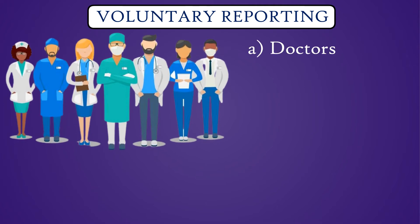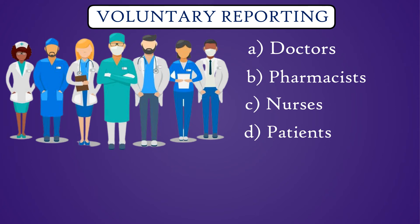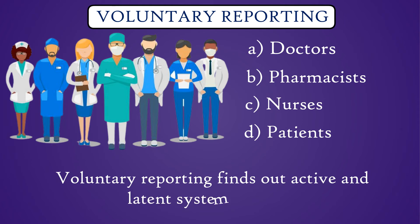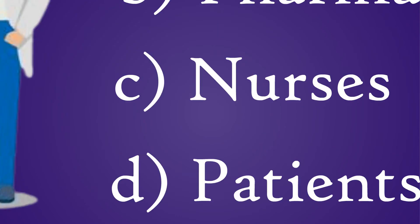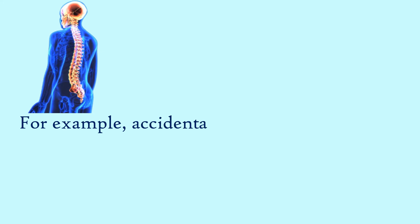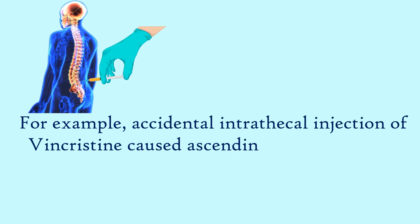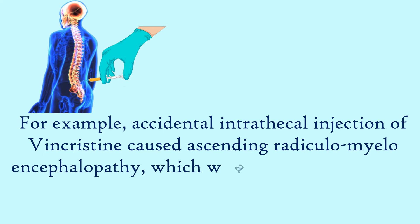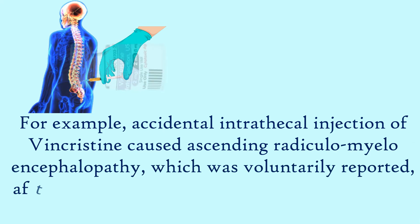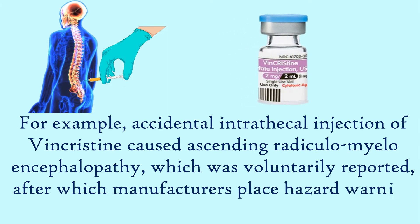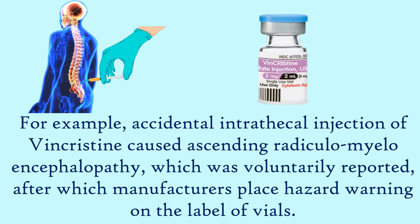The next method is voluntary reporting. It can be done by doctors, pharmacists, nurses, patients, and others. Voluntary reporting finds out active and latent system failures. For example, accidental intrathecal injection of vincristine caused ascending radiculomyeloencephalopathy, which was voluntarily reported, after which manufacturers placed hazard warnings on the label of vials.